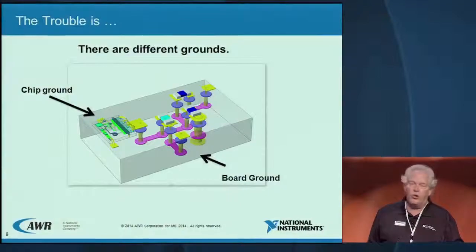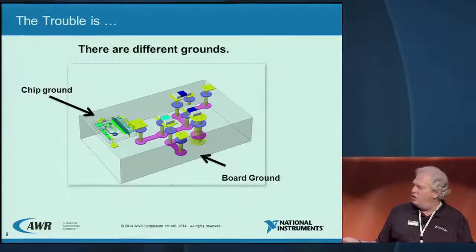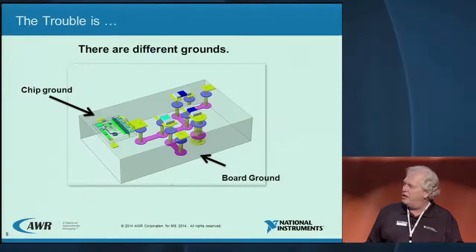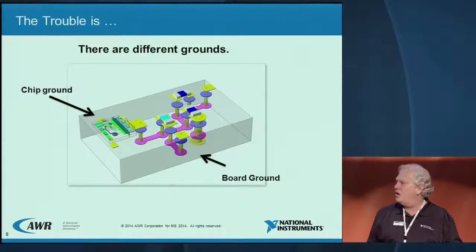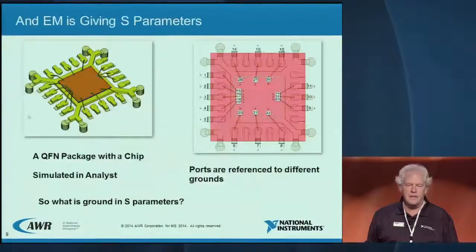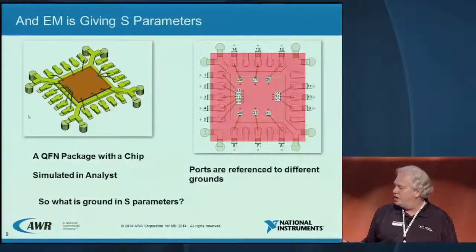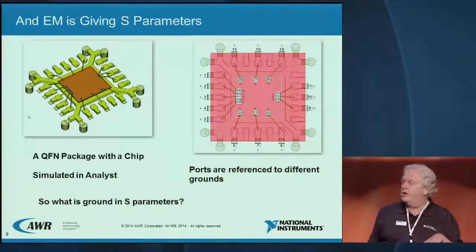Let's talk about the grounding issue. There's the MIMIC and there's the board — they have different grounds. When you simulate that spiral in the planar simulator Axiom, its ground in this case is the chip ground: the bottom of the chip that's been metallized. It has no idea what the board ground is; it's not even in the problem. And what you're about to do is take S-parameters out of these simulators and put them into a circuit simulator — that's what we've got to worry about.